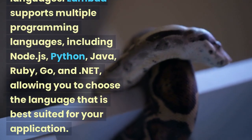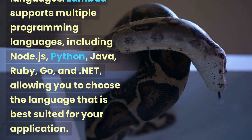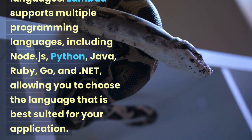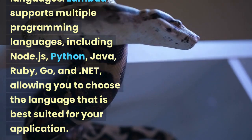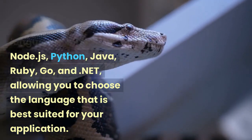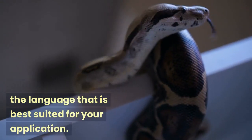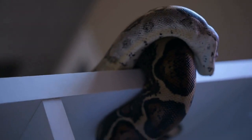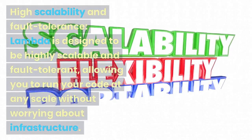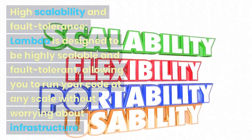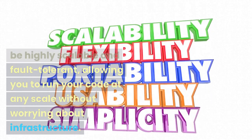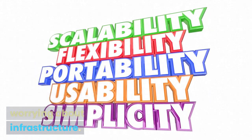Multiple Programming Languages: Lambda supports multiple programming languages, including Node.js, Python, Java, Ruby, Go, and .NET, allowing you to choose the language that is best suited for your application. High Scalability and Fault Tolerance: Lambda is designed to be highly scalable and fault-tolerant, allowing you to run your code at any scale without worrying about infrastructure.